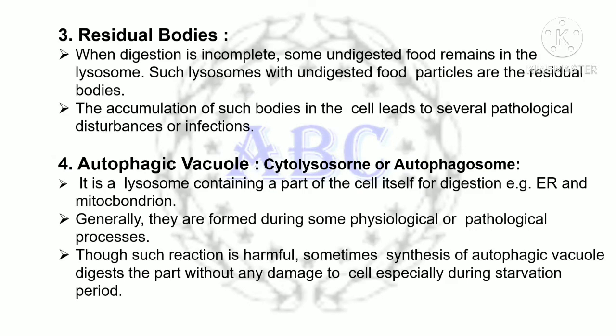The third type is residual bodies. When digestion is incomplete, some undigested food remains in the lysosome. Such lysosomes with undigested food particles are called residual bodies. The accumulation of such bodies in the cell leads to several pathological disturbances or infections. These residual bodies come under secondary lysosomes.